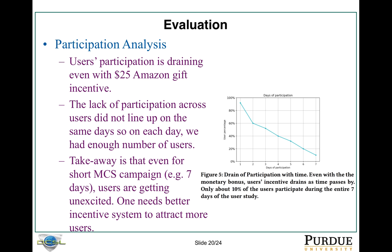For participation, we gave $25 Amazon gift cards as an incentive to users. But we found that users' participation is decreasing across the days. The lack of participation across users did not line up on the same day, so we could still have enough numbers each day — some users missed Monday, some missed two days, but not all users missed the same day. The takeaway message is that even for a very short mobile crowdsensing campaign like ours — seven days — users are getting less excited as time passes. So when designing a mobile crowdsensing campaign, provide a very good incentive system to attract people.